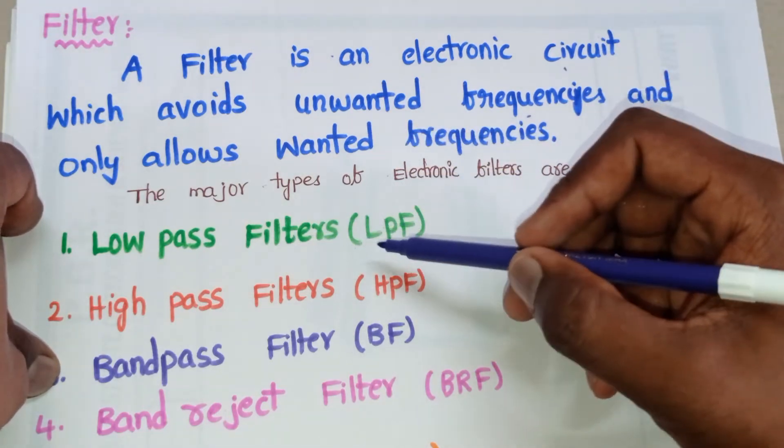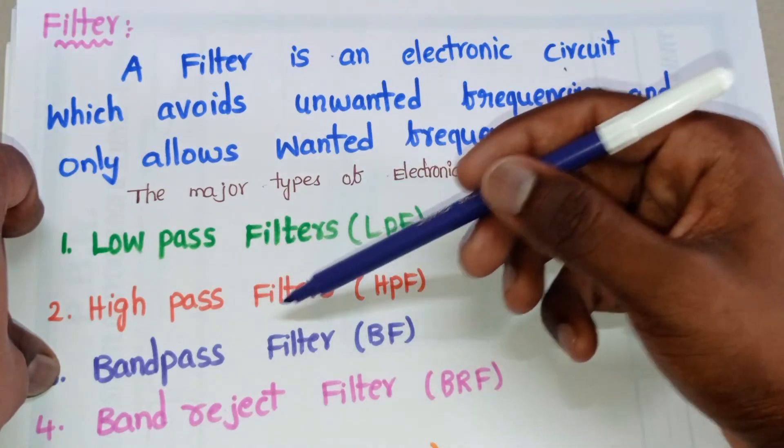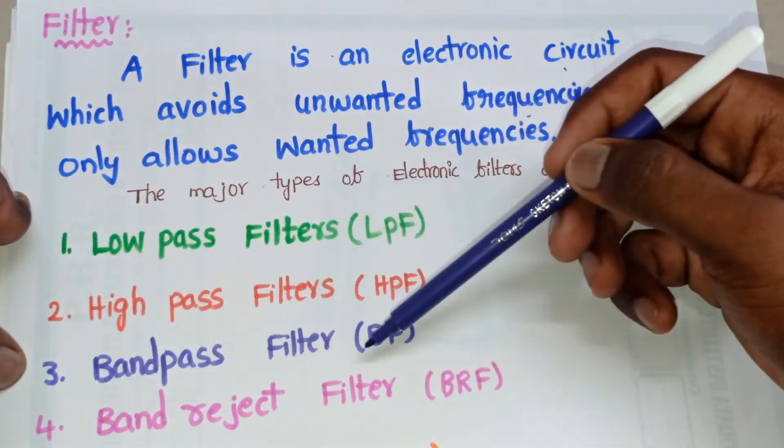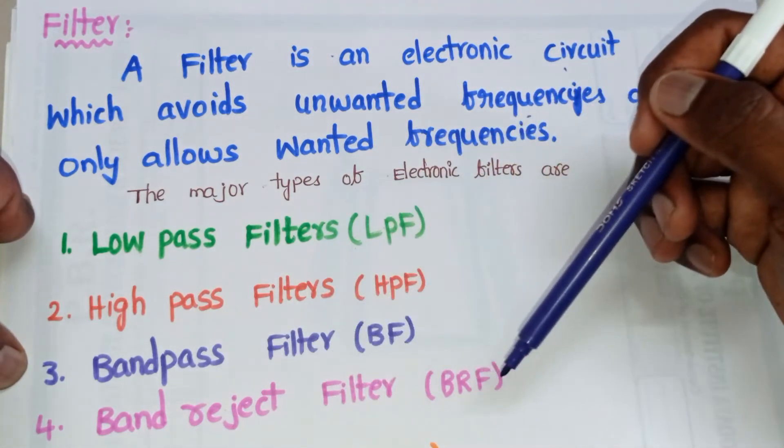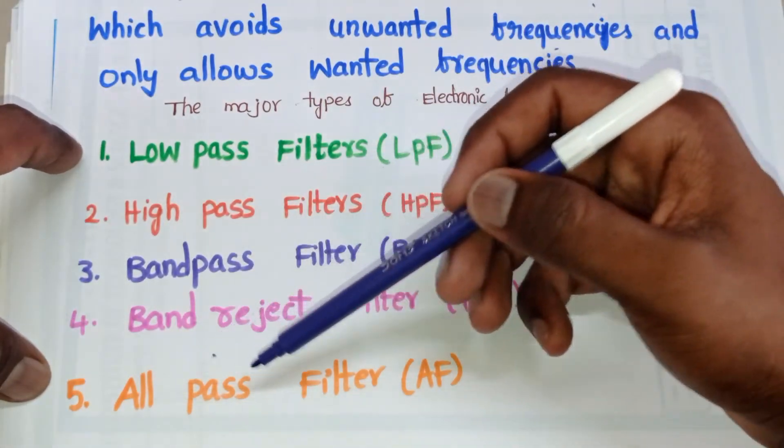The second one is high pass filter, HPF. Third one is band pass filter, BF. And fourth one is band reject filter, BRF.